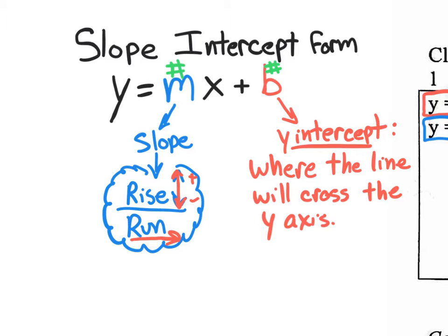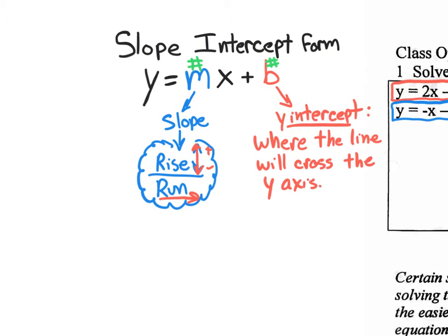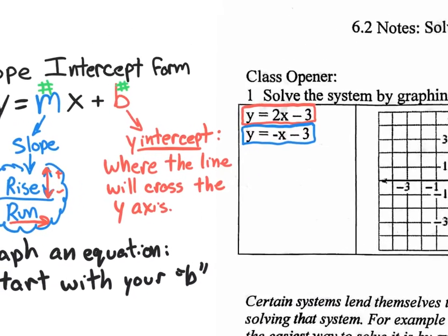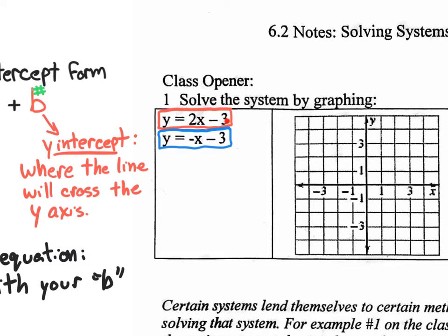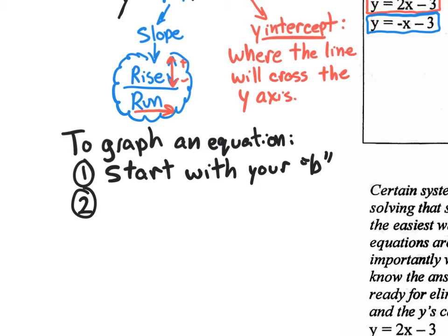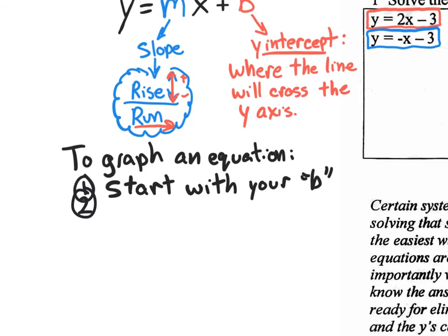This is all review from semester 1. To graph a slope-intercept form equation, you start with the b-value and put a dot right on the y-axis where your b-value is. Then, from that point, you rise and run according to your slope — the number in front of x. If the slope isn't a fraction, put it over 1.